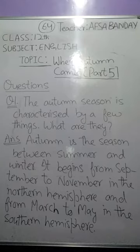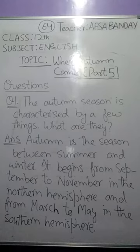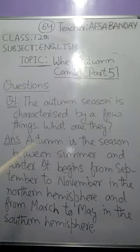Question number one: the autumn season is characterized by a few things. What are they? Autumn is the season between summer and winter. In countries like England, there are four seasons: spring, summer, autumn, and winter. So it's the season that falls between summer and winter.